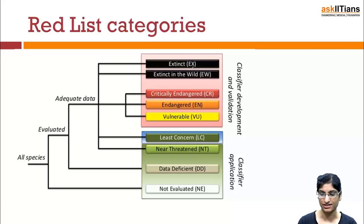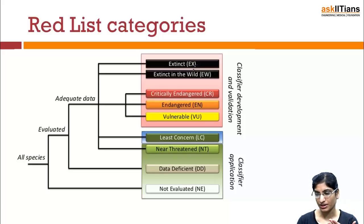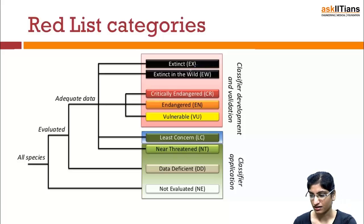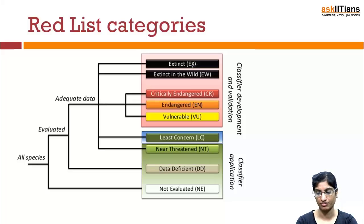The first category is Extinct. A taxon is extinct when there is no reasonable doubt that the last individual has died — there is no clue, we can say the last organism has died. We don't have any information. The example is Dodo.